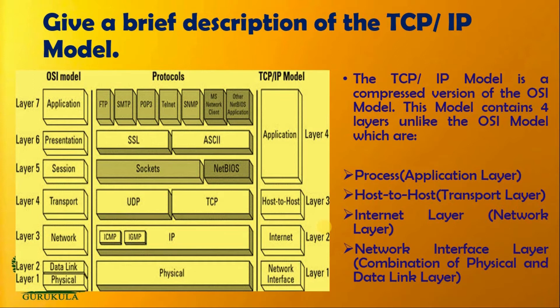The transport layer is equivalent to the transport layer in the OSI model, and the network layer is equivalent to the network layer in the OSI model. The data link layer and the physical layer from the OSI model are merged together and named as the network interface layer, which takes care of the interface between one system and another.